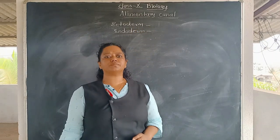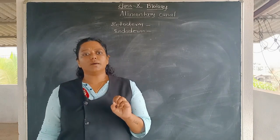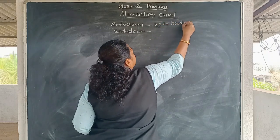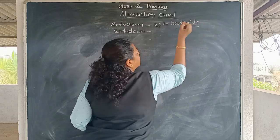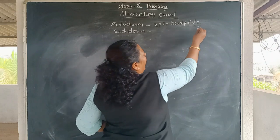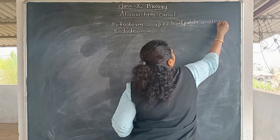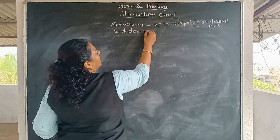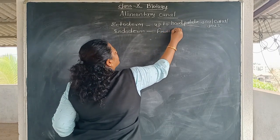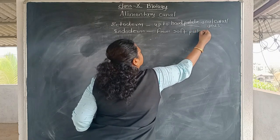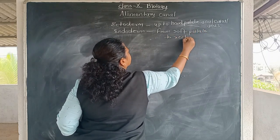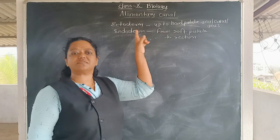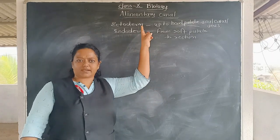Which parts come from ectoderm? Ectoderm is outside. Up to the hard palate, and the anal canal and anus — these are coming into the ectoderm. Which parts are coming into the endoderm? From the soft palate to the rectum — these are coming into the endoderm. So the alimentary canal is a tubular structure originated from these two parts: ectoderm and endoderm.